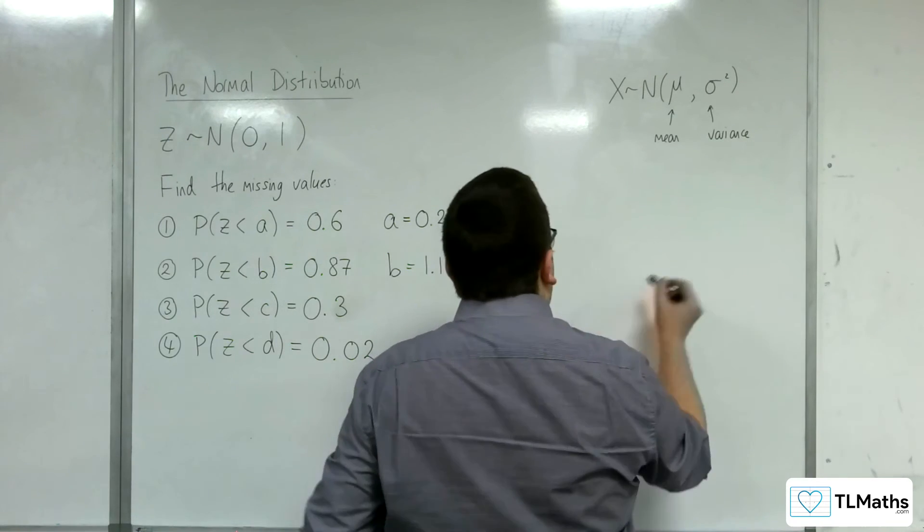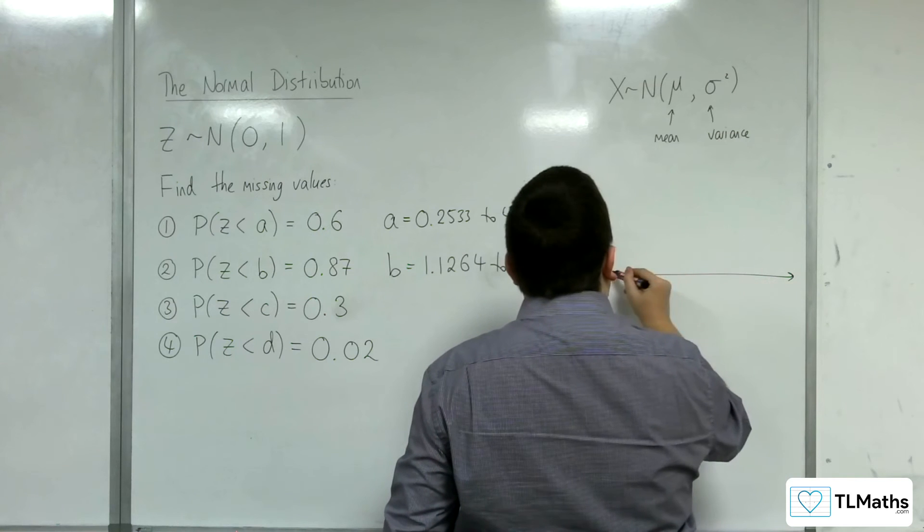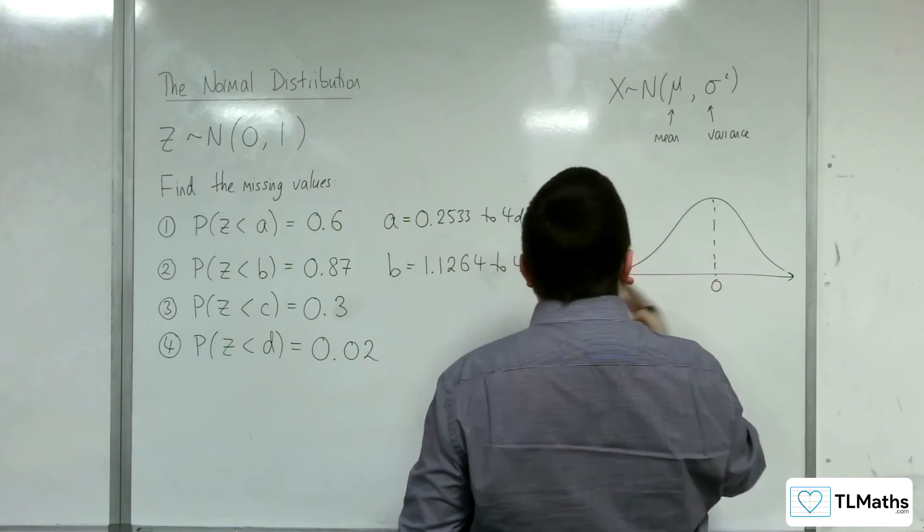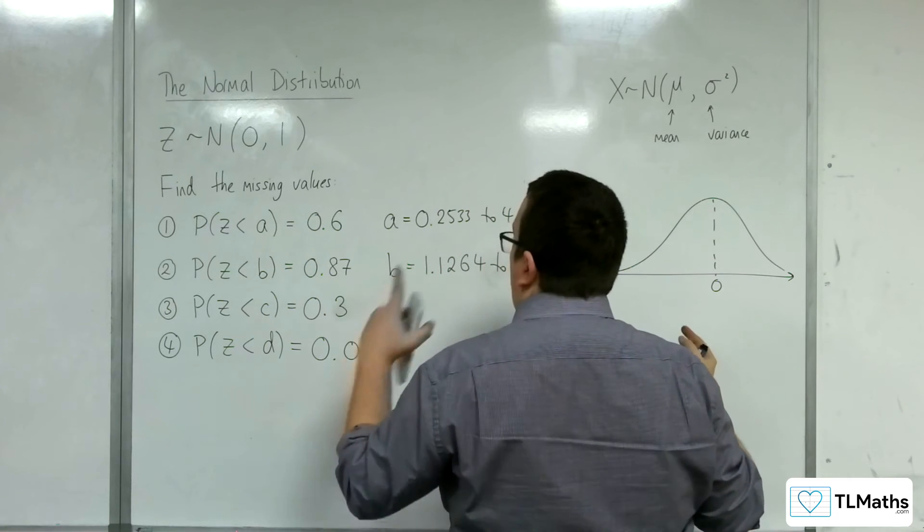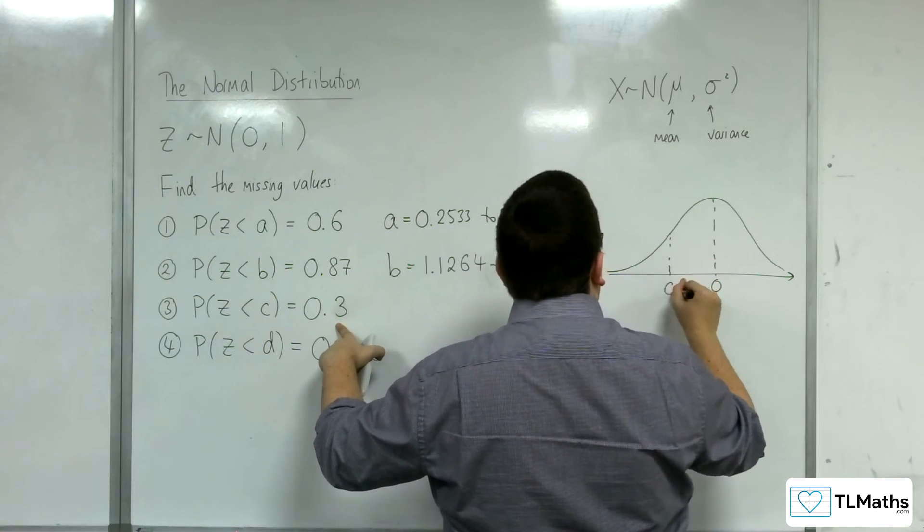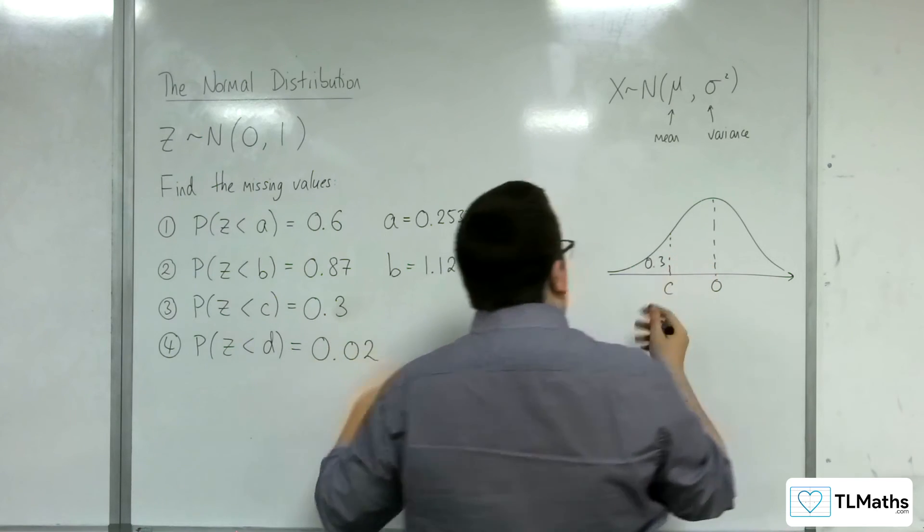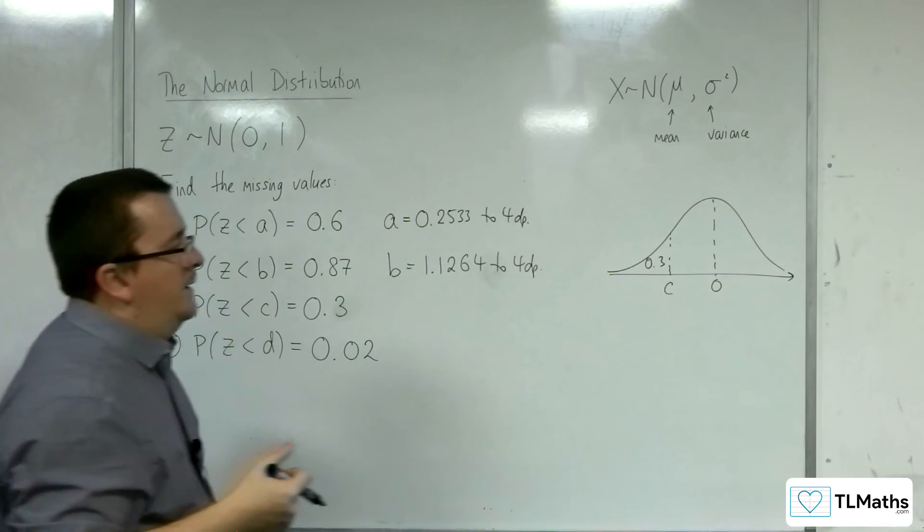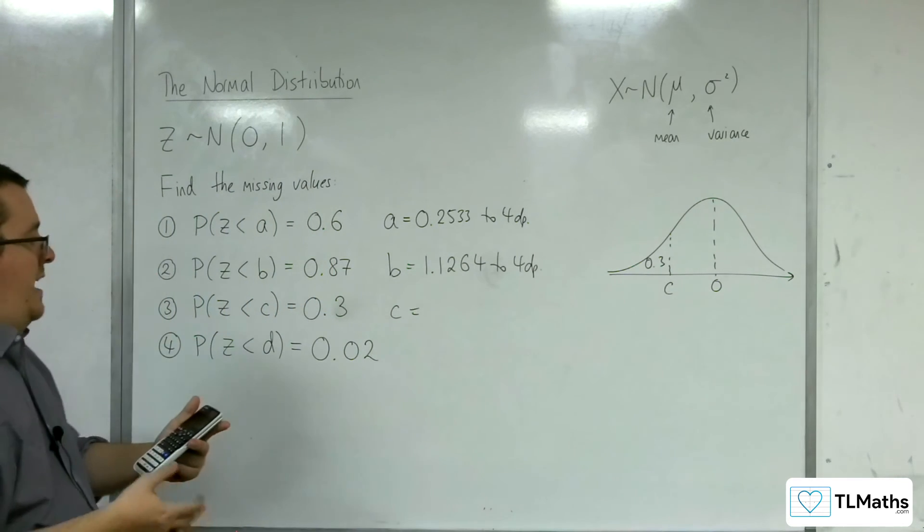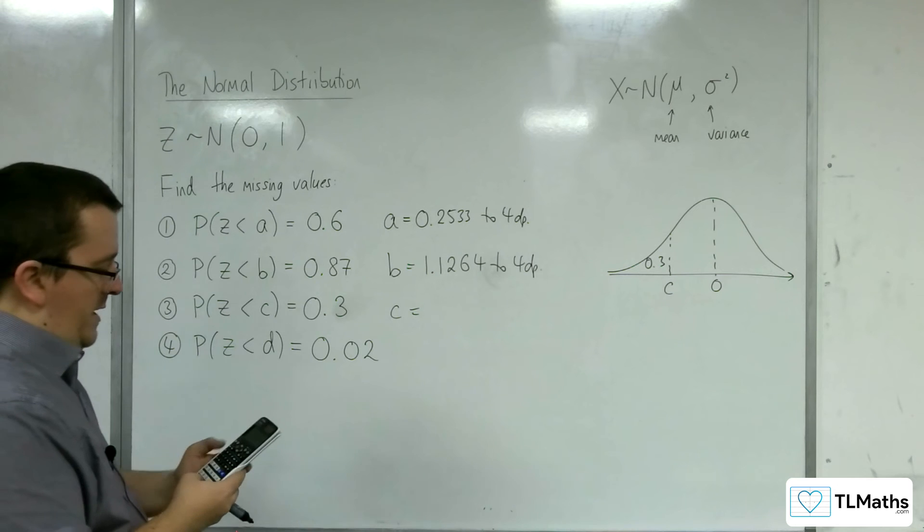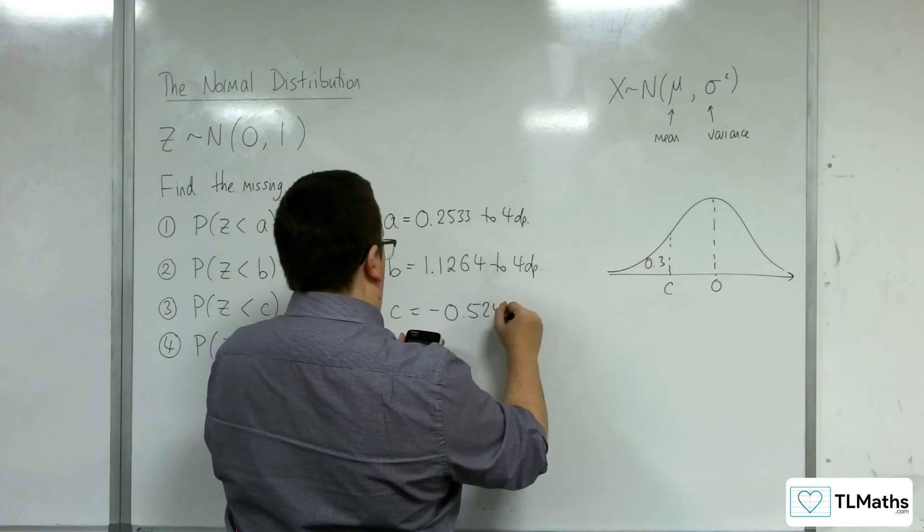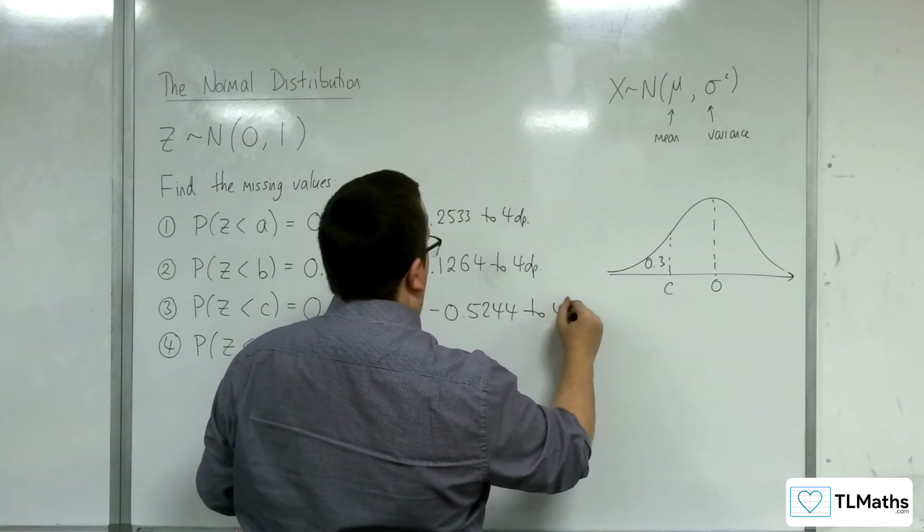Number 3. C is somewhere along here, so the probability to the left is 0.3. That would mean it would have to be down here somewhere, in order for that probability to be that small. Going back into the area, change that to 0.3, and we get negative 0.5244 to 4 decimal places.